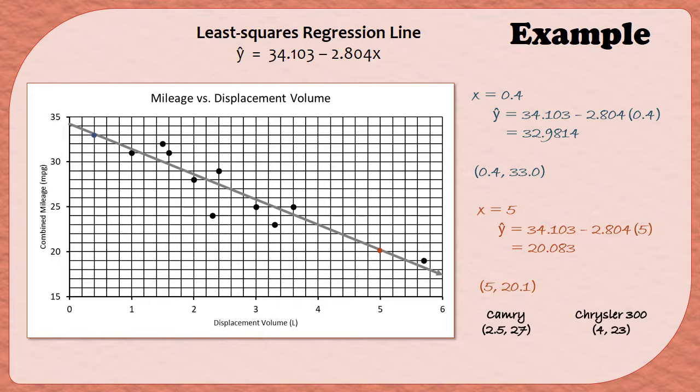If I look at the line that I drew, both of these predictions were made using that equation so both of these predictions should be on the line. So the Camry is this point here, this little purple dot, and that has an x value of 2.5 and a y value of about 27. So that prediction is on the line, that means we graphed our line properly. Let's see if the Chrysler is there as well. So the Chrysler 300 had an x value of 4 and a y value of 23. Check it out, there it is on our line as well.